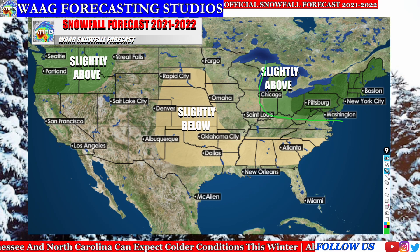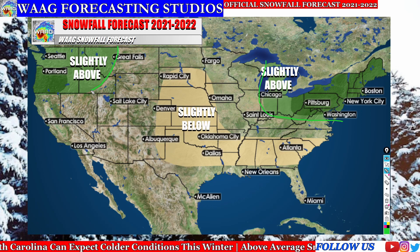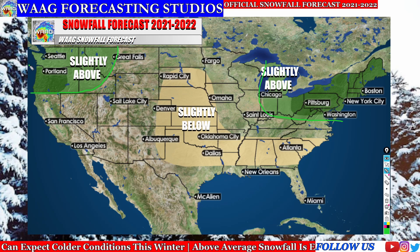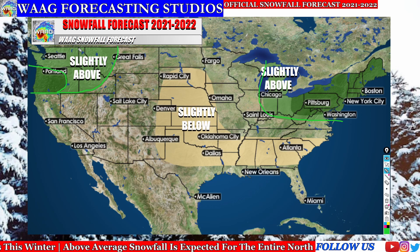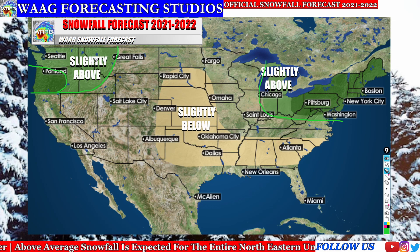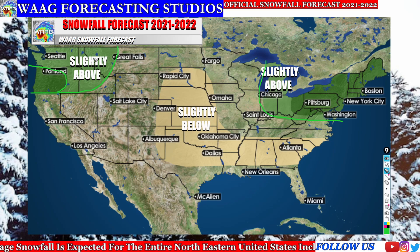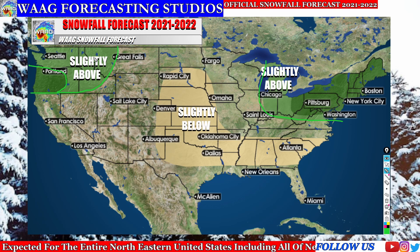On our second slightly above average region, we have anywhere from Great Falls, Montana all the way down to Oregon, including western Oregon. This is the slight green region where you can be seeing some of that slightly above average activity. Not above average, but slightly above average snowfall for this region again due to that jet stream.